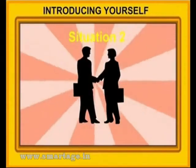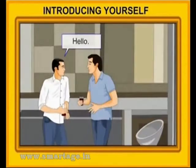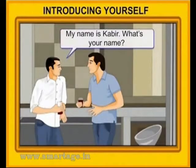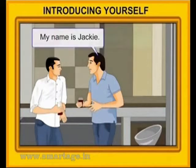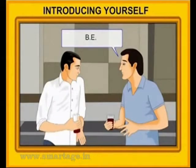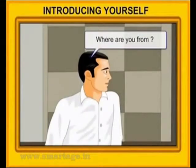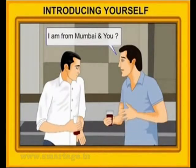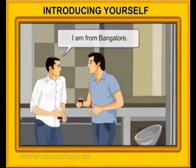Situation 2. Hello. Hi. My name is Kabir. What's your name? My name is Jackie. What are you studying? Where are you from? I am from Mumbai. And you? I am from Bangalore.